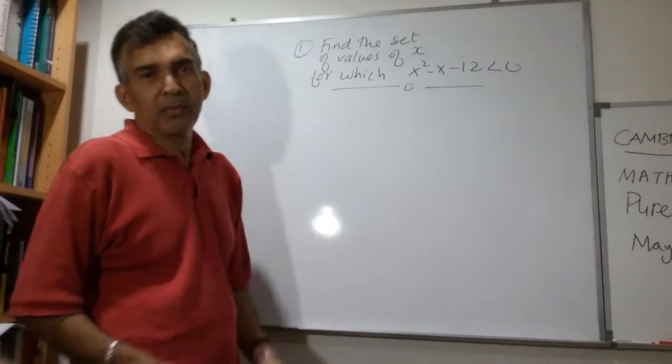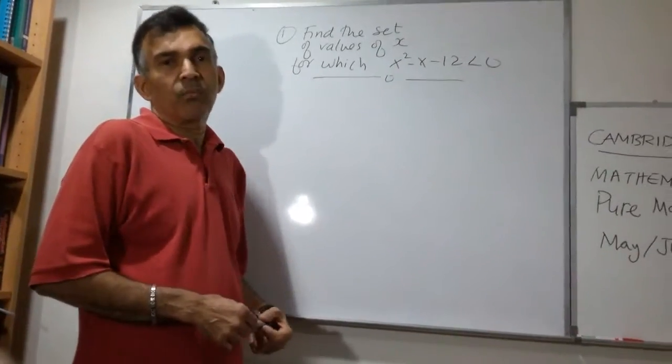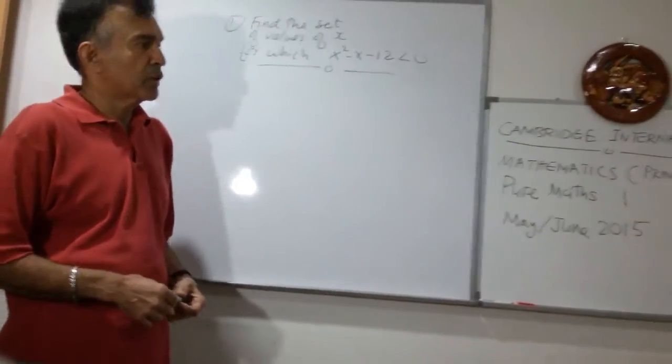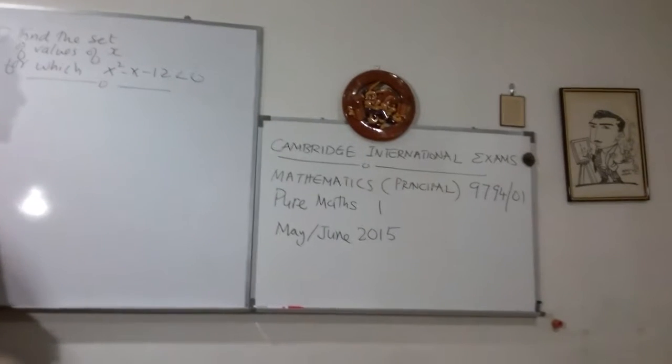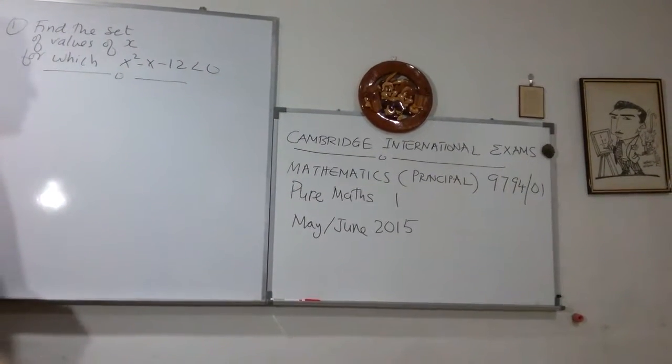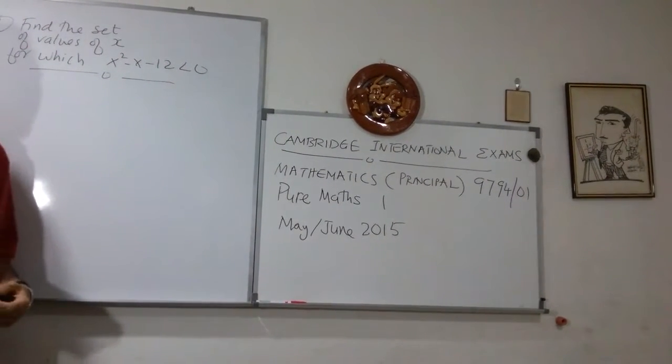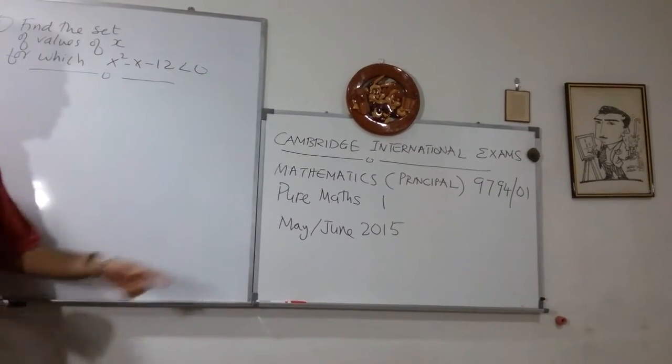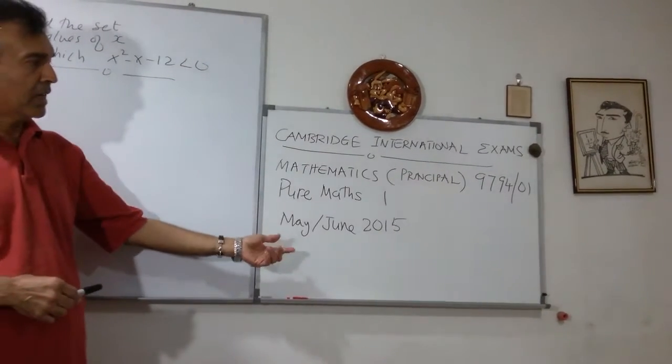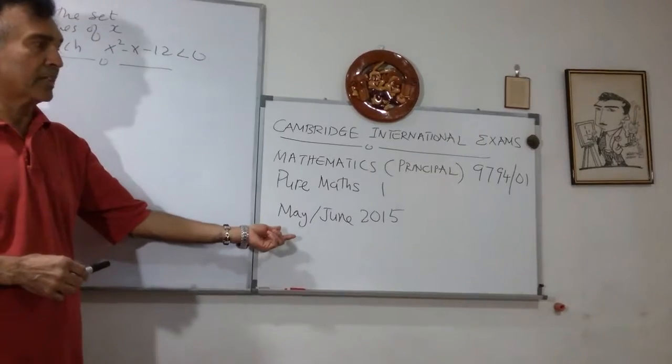Hi, welcome to MathCenter.com. In this series of videos, we are going to be looking at the Mathematics Principle Subject Code 9794 exam paper. It's Pure Maths 1. This is a May-June 2015 exam paper.